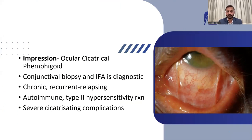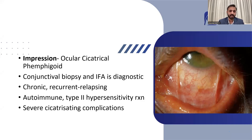OCP needs systemic immunosuppression. If you don't treat it, it can lead to extreme dryness because all the lacrimal glands and mucus-secreting goblet cells will be consumed by the process of inflammation, leaving the patient with a very dry surface not compatible with vision. You need to prevent cicatrization or scarring of the conjunctiva by giving systemic immunosuppression; otherwise it can lead to dryness, entropion, trichiasis, and corneal scarring.